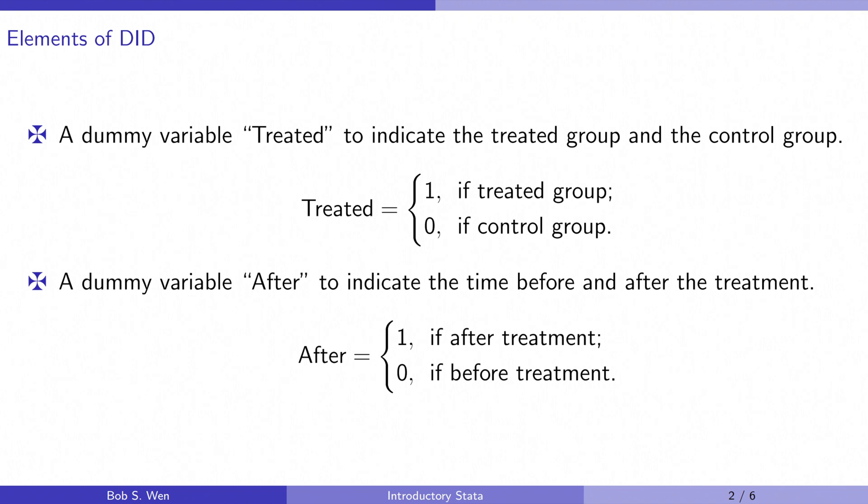We have two time periods. The treatment occurs in between the two time periods. In order to figure out the treatment effect, we compare some outcomes such as wage or employment between the treated group and the control group before and after the treatment. It gives us a better understanding of whether the treatment makes the difference.